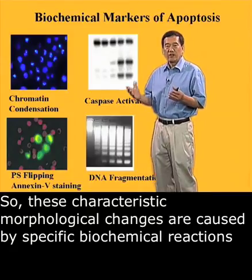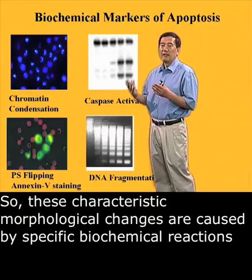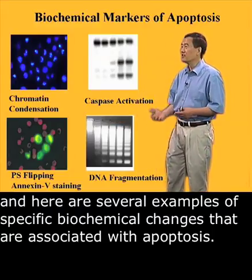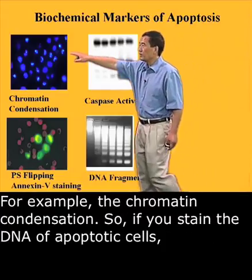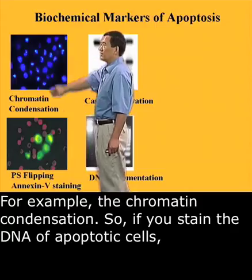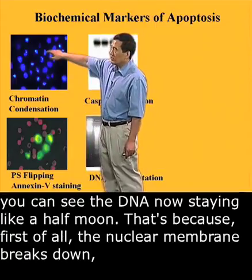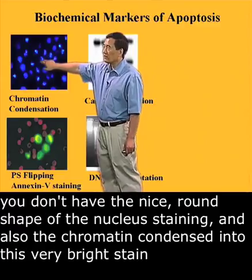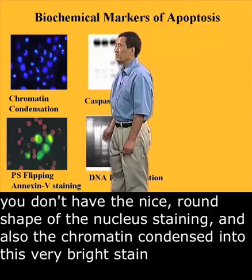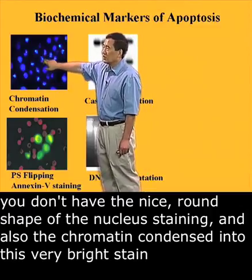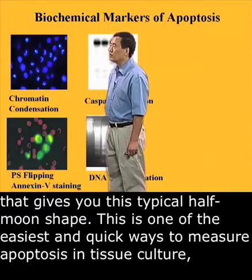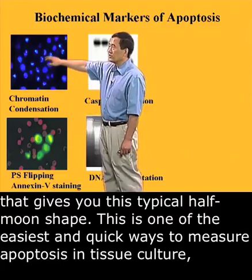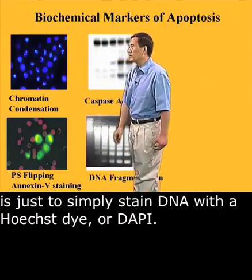These characteristic morphological changes are caused by specific biochemical reactions. Here are several examples of specific biochemical changes associated with apoptosis. For example, chromatin condensation: if you stain the DNA of apoptotic cells, you can see the DNA stains like a half moon. That's because first the nuclear membrane breaks down, so you don't get the nice round shape of the nuclear stain. Also the chromatin condenses into a very bright stain giving you this typical half-moon shape. This is one of the easiest and quickest ways to measure apoptosis in tissue culture — simply staining DNA with Hoechst dye or DAPI.